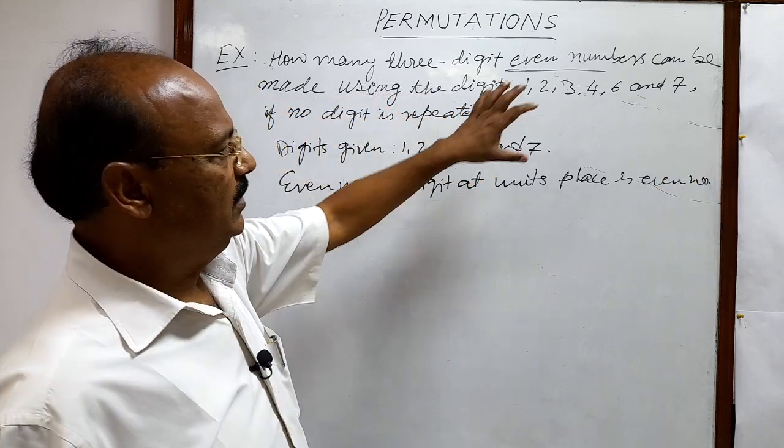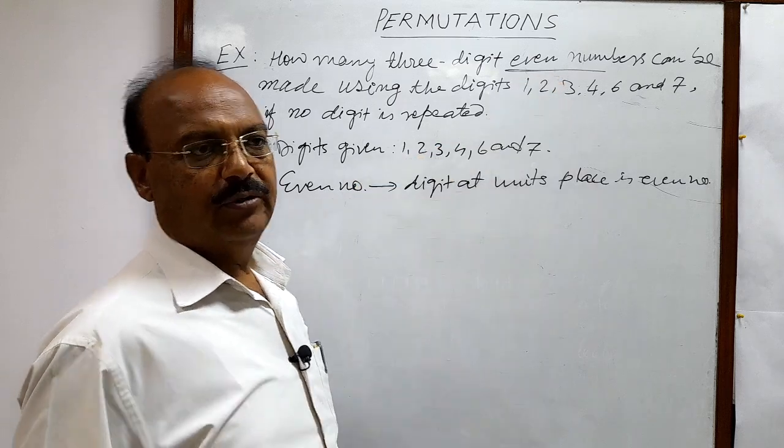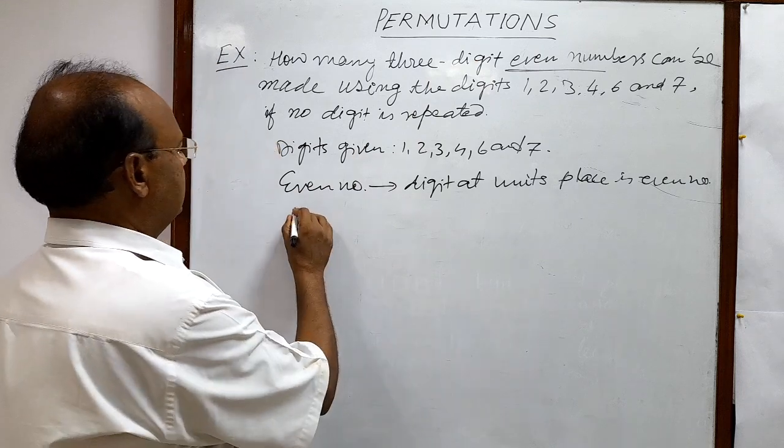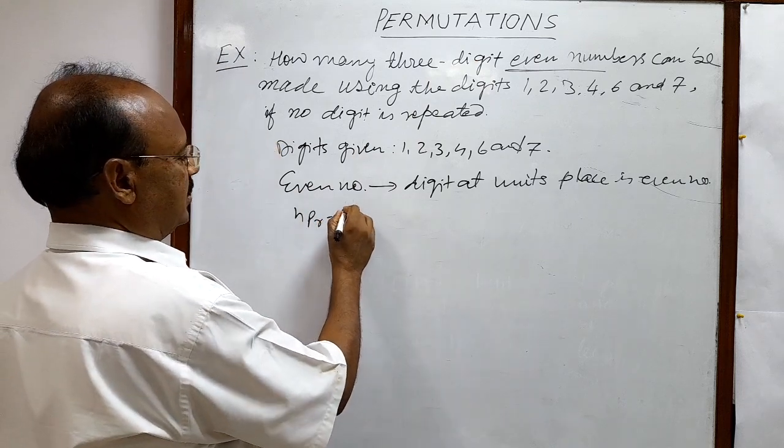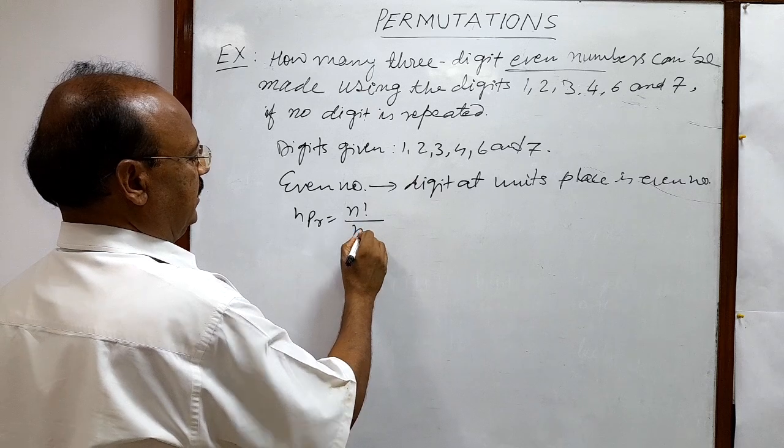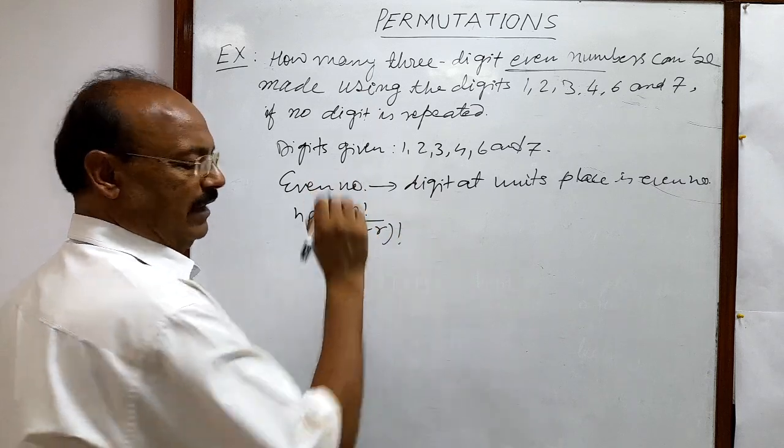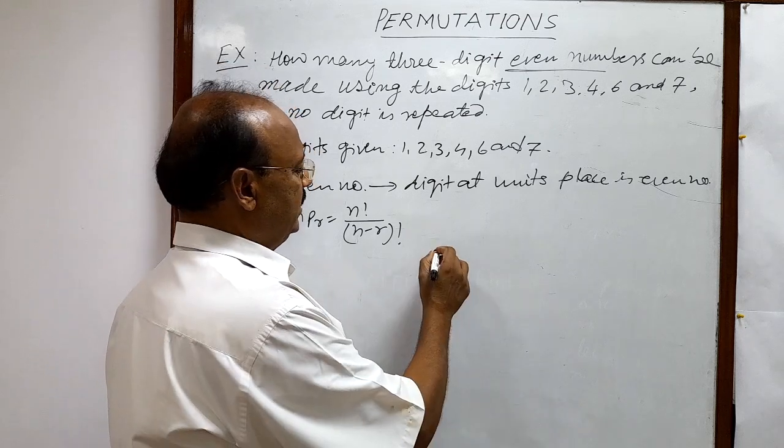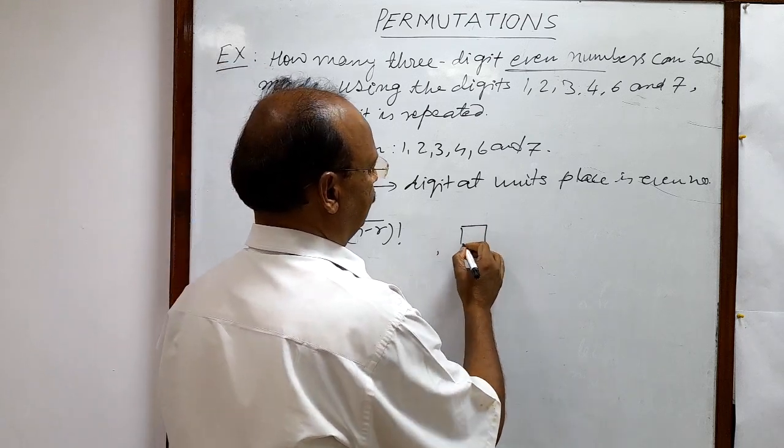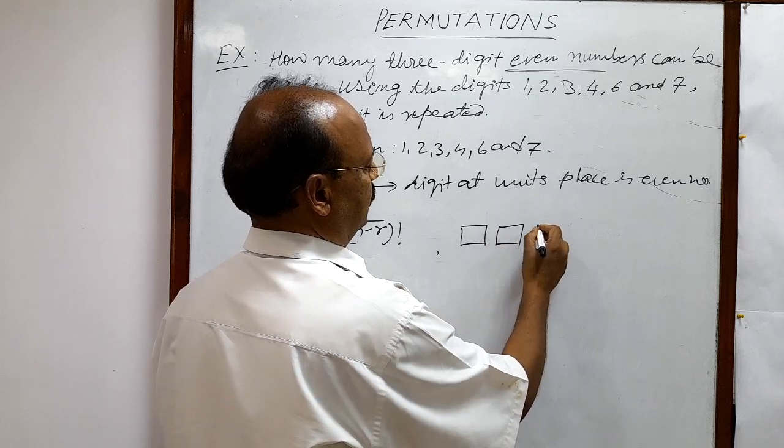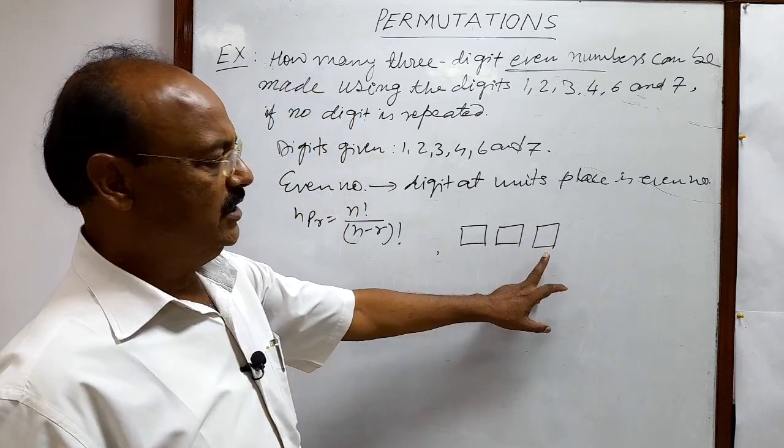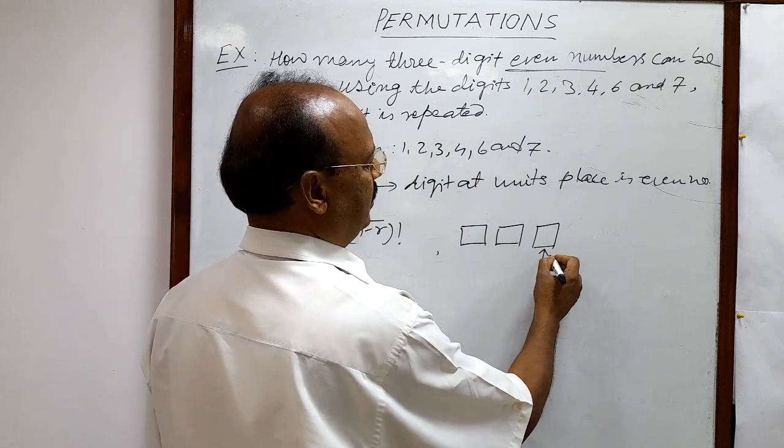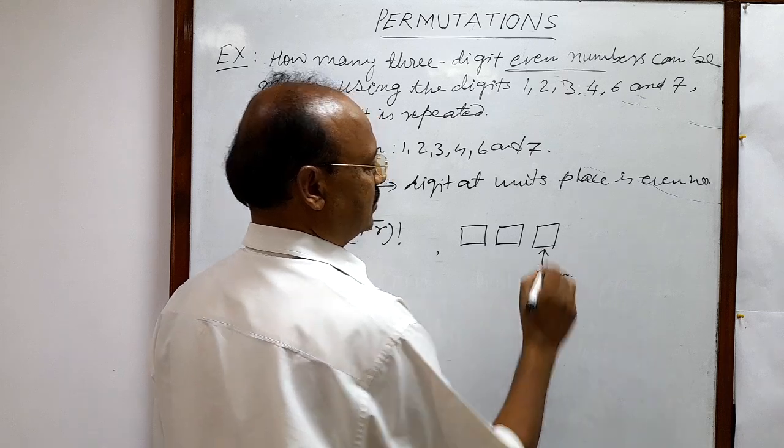So for solving this problem we will use the formula that we generally use in this chapter permutation. The formula is NPR is equal to N factorial by N minus R whole factorial. First of all we need to understand that we have to form three digit numbers. So we are having three places and this is units place. So this number should be filled up by even numbers.